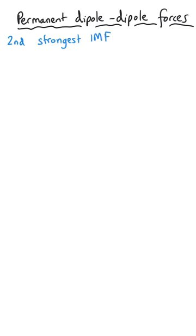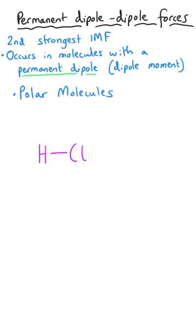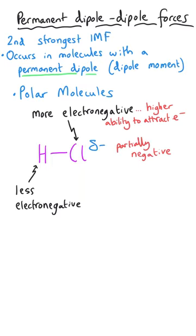The simplest intermolecular force is called permanent dipole-dipole forces. This is actually the second strongest intermolecular force, and it occurs between polar molecules — molecules that have got a permanent dipole. Dipoles occur where you get a covalent bond between elements that have different electronegativities, meaning one atom has a greater power to attract the electron density in the covalent bond than the other, so the electrons are pulled towards one atom, making it partially negatively charged and leaving the other partially positively charged.